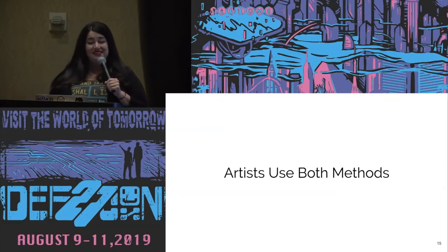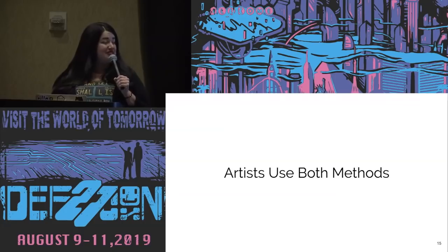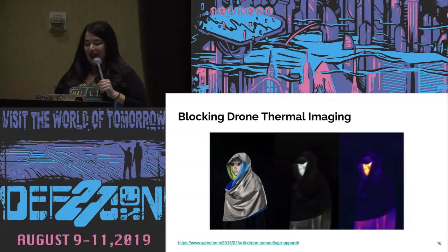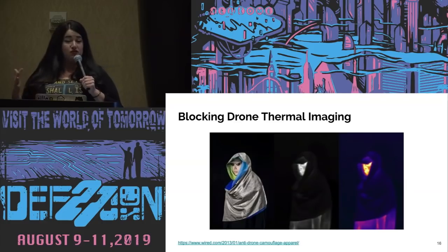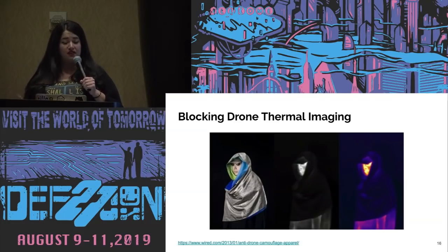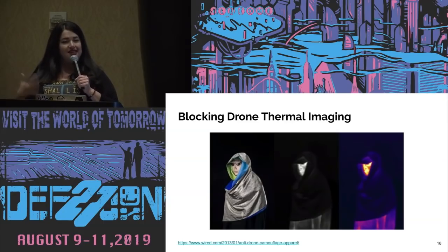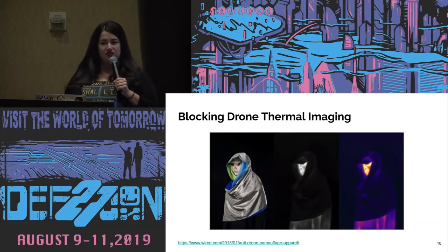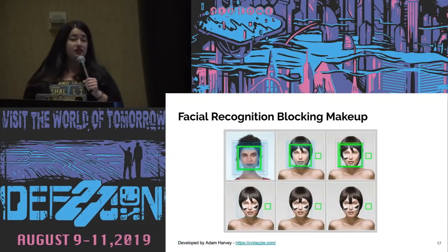Artists have traditionally used both methods to mess with digital surveillance technology. For example, when drones seek targets, they often look for a heat register of a person. A fashion designer has built anti-drone camouflage apparel that blocks that heat signature using a reflective fabric.